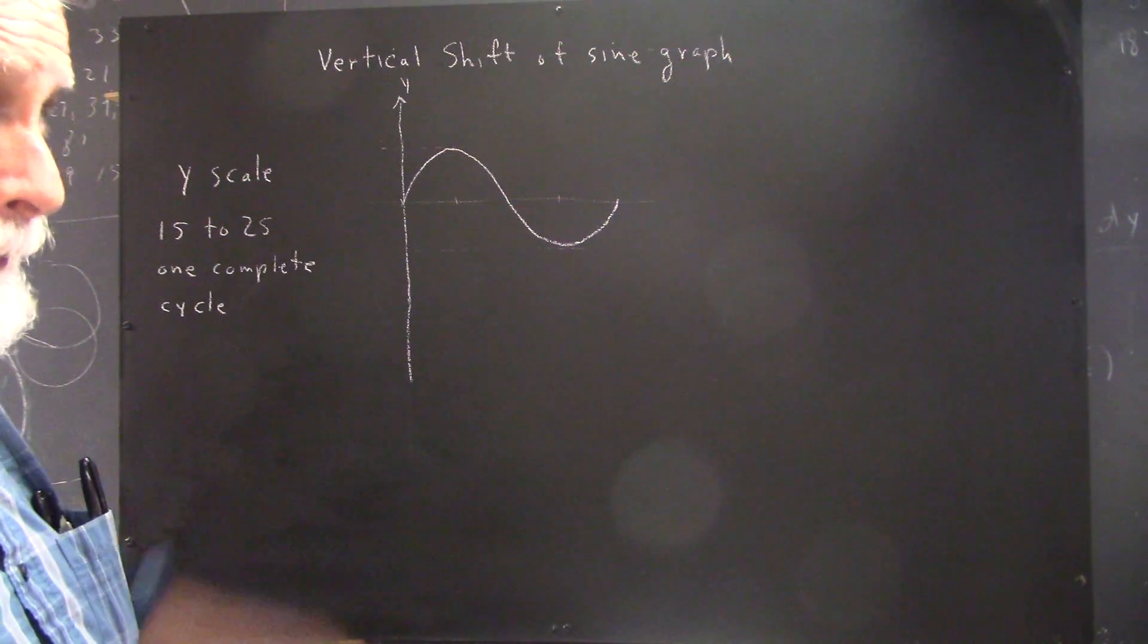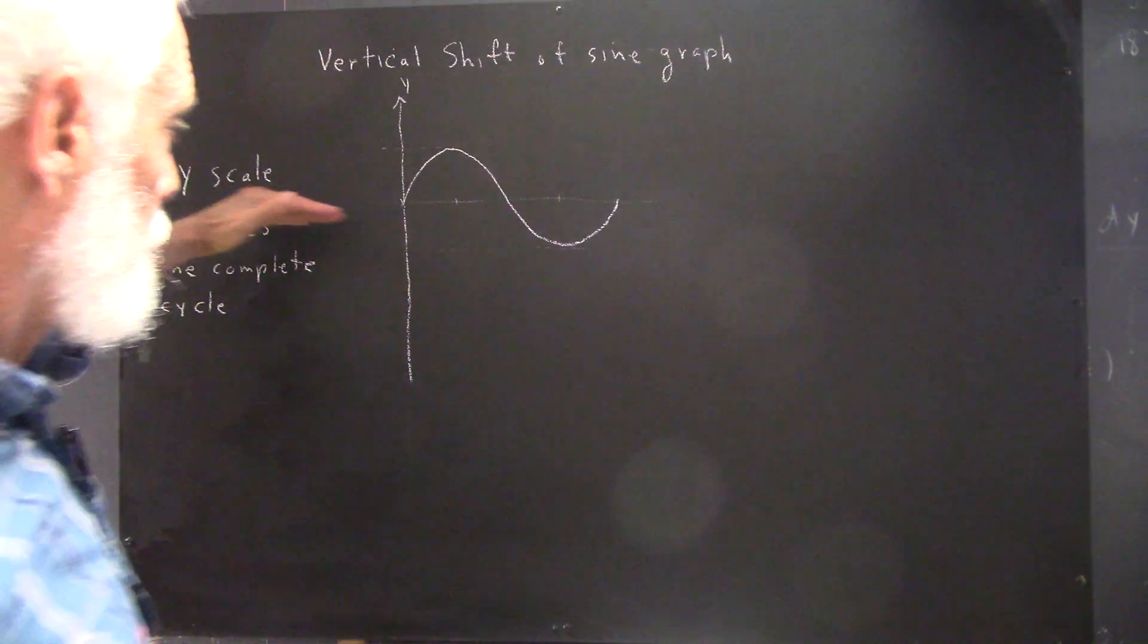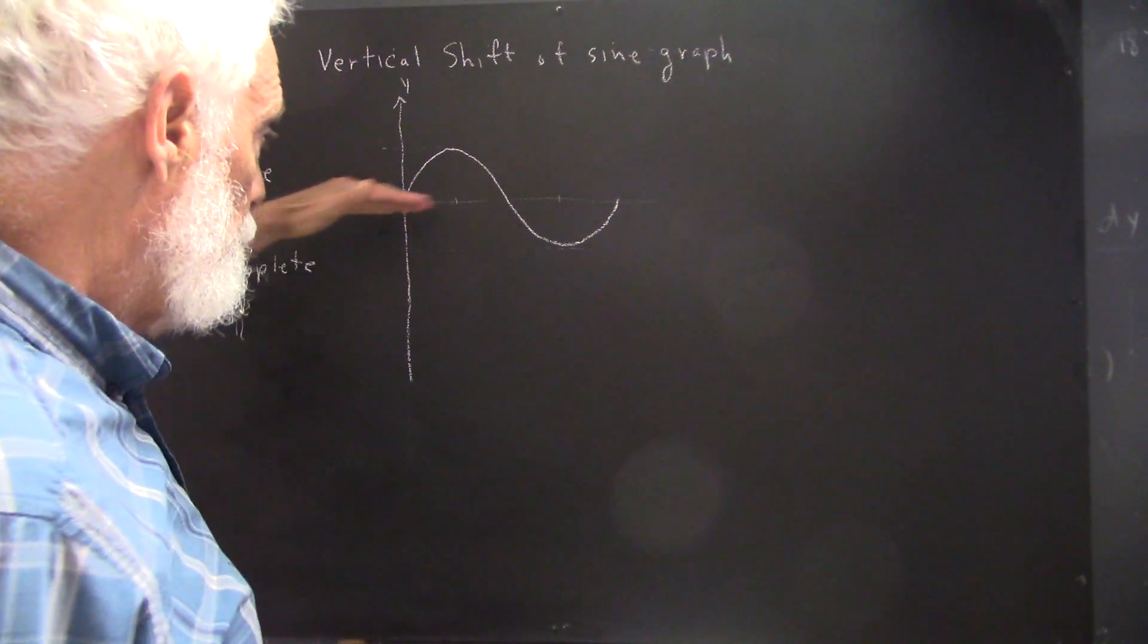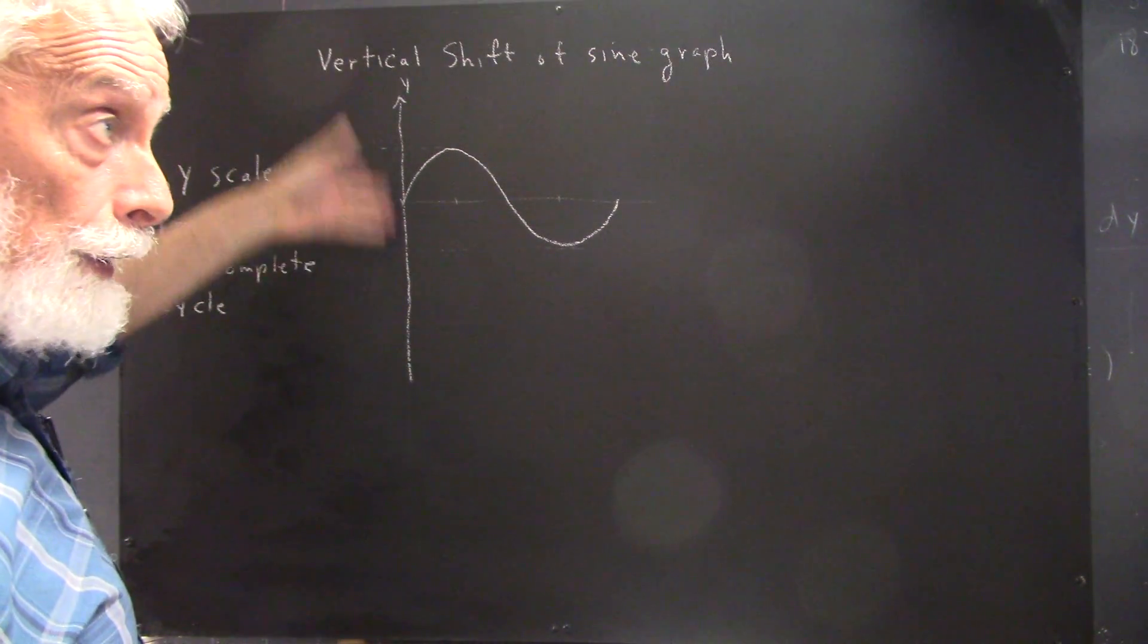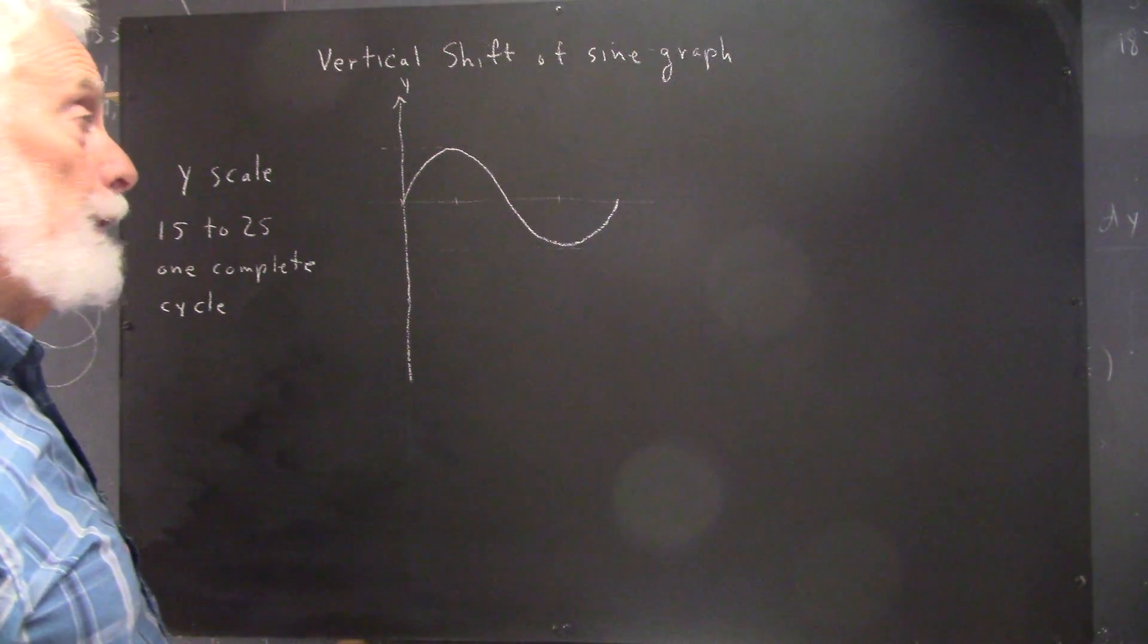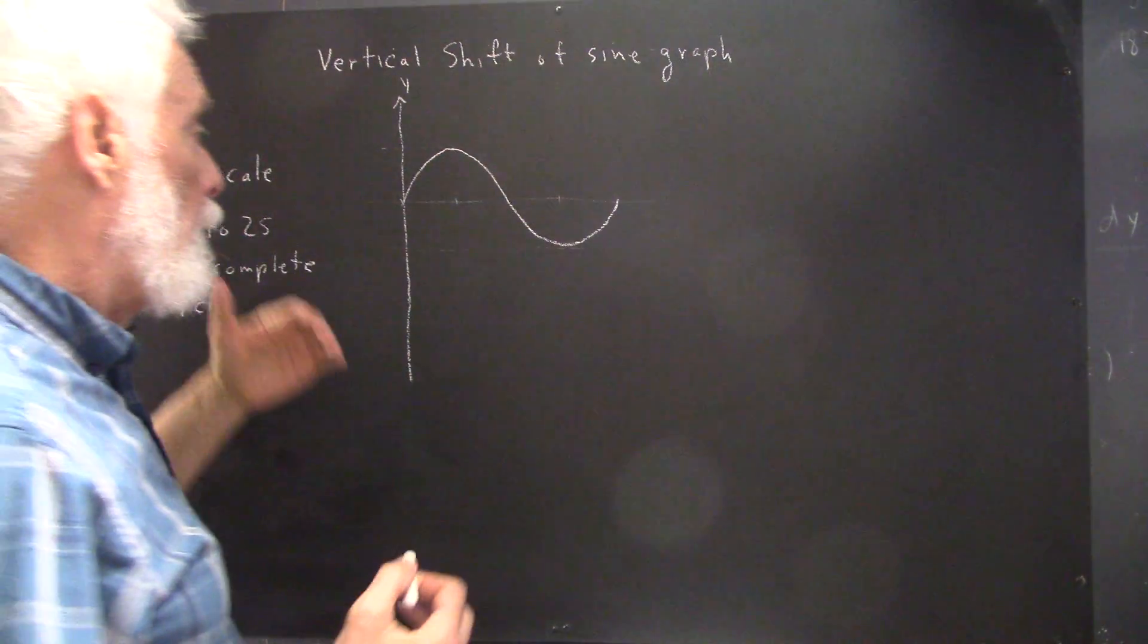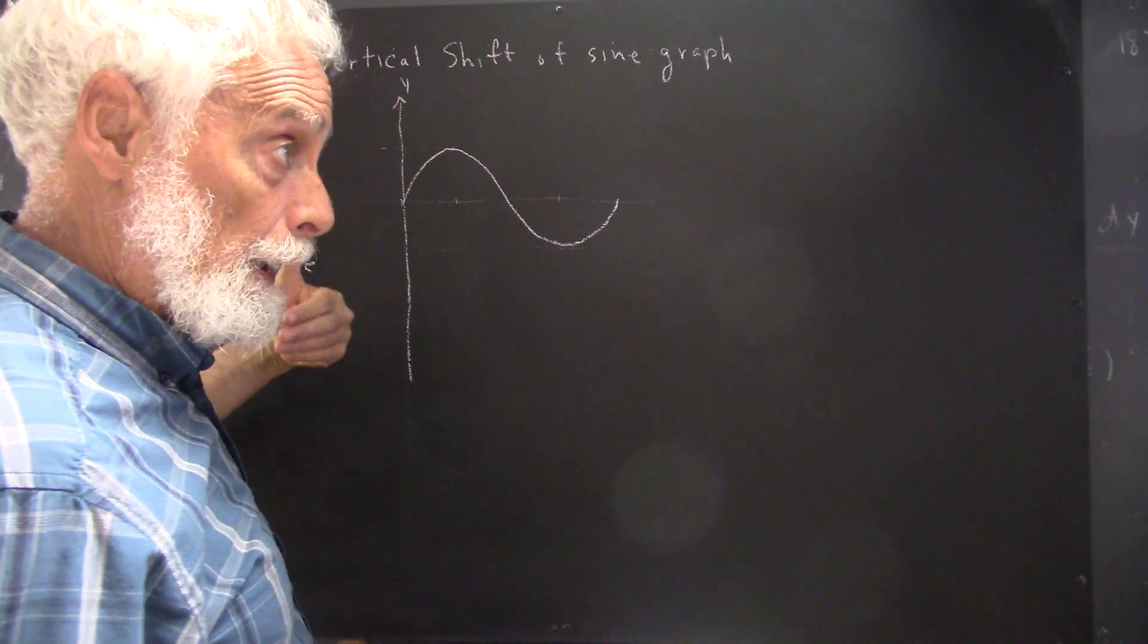Here we've depicted an unlabeled sine graph, got an axis right through the middle in the vertical sense, and we've got a y-axis here. Now, we haven't put an x-axis on this graph, or horizontal axis.